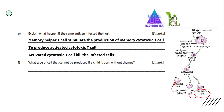Question F: What type of cell cannot be produced if a child is born without thymus? The answer is T cell. T cell is produced in the bone marrow, but the cell will migrate to the thymus and mature there to become a T cell. So if a child is born without thymus, T cell cannot be produced.